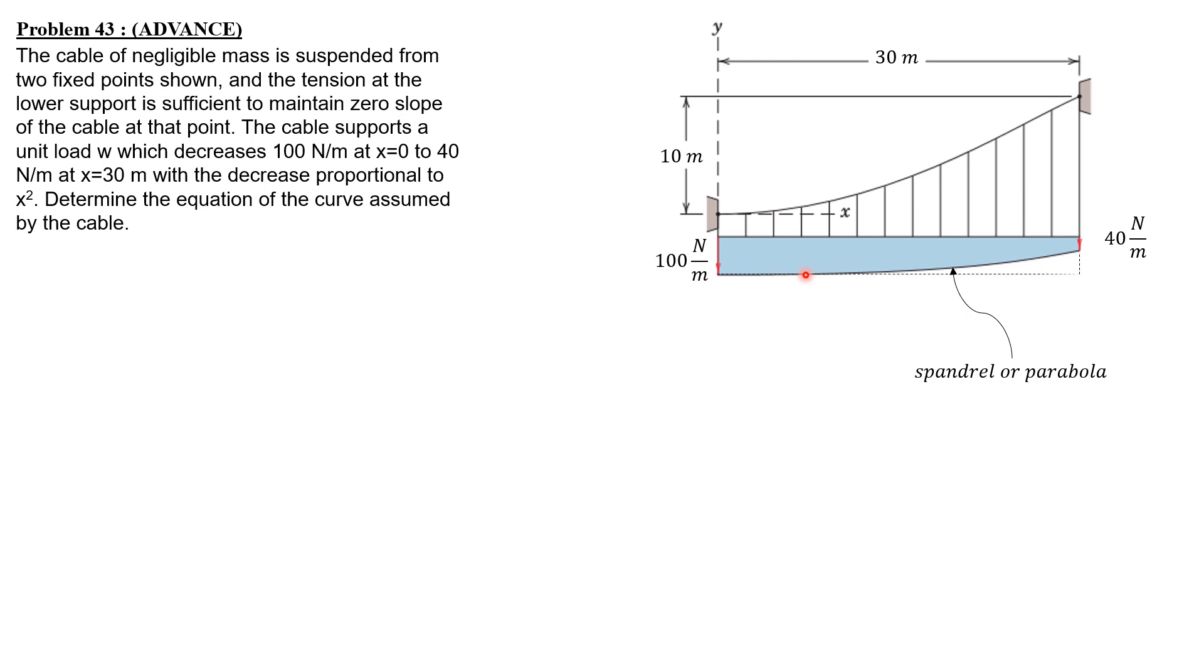We will call the tension as H at the lowest point. Then at the right end, we have two components, horizontal and vertical. Let's compute H by summing up moments about the right end equals zero, clockwise as positive.